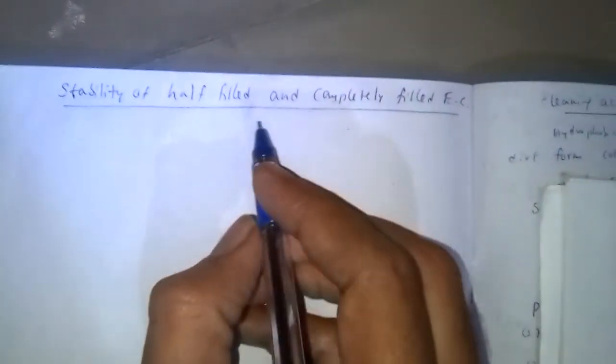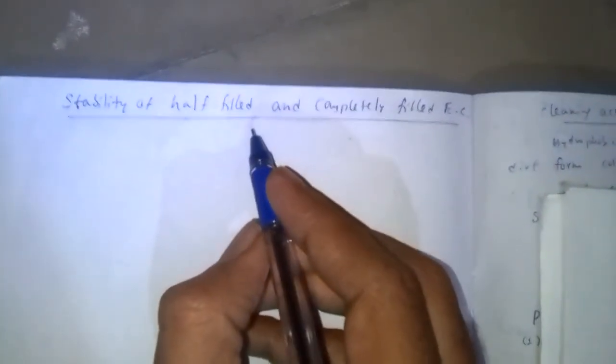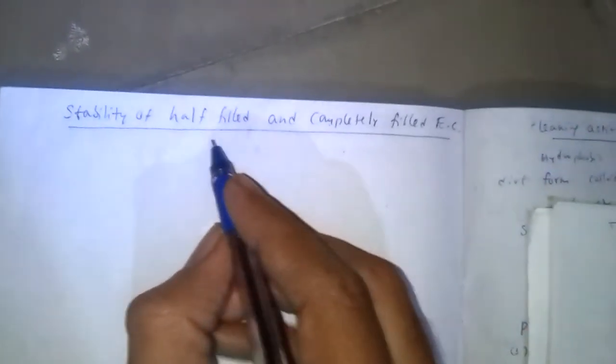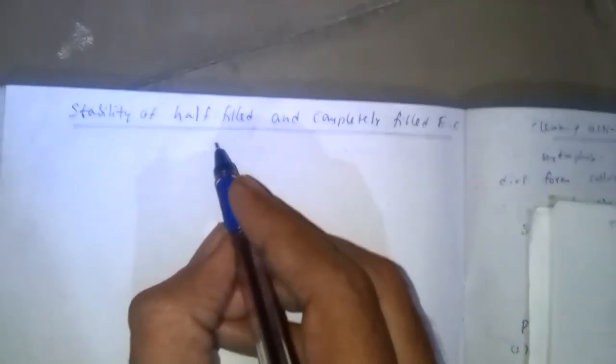Stability of half-filled and completely filled electronic configurations: presence of half-filled and completely filled subshells gives greater stability to the atom.